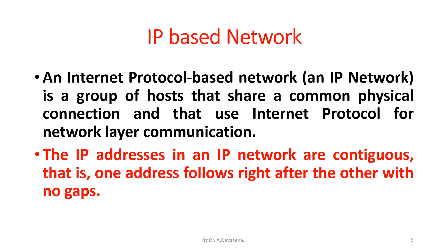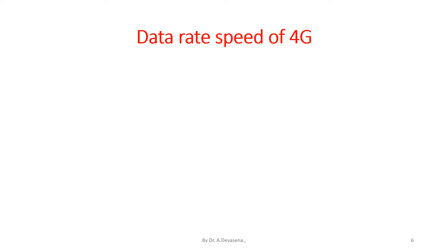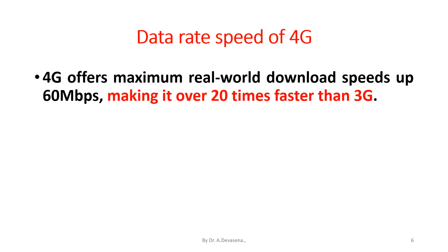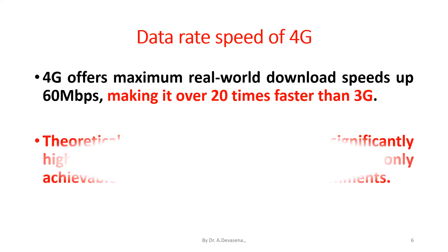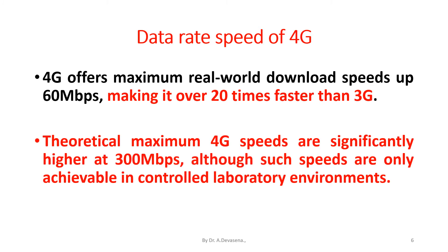4G offers maximum real-world download speeds of up to 60 Mbps, making it over 20 times faster than 3G. The theoretical maximum 4G speeds are significantly higher at 300 Mbps, although such speeds are only achievable in controlled laboratory environments.